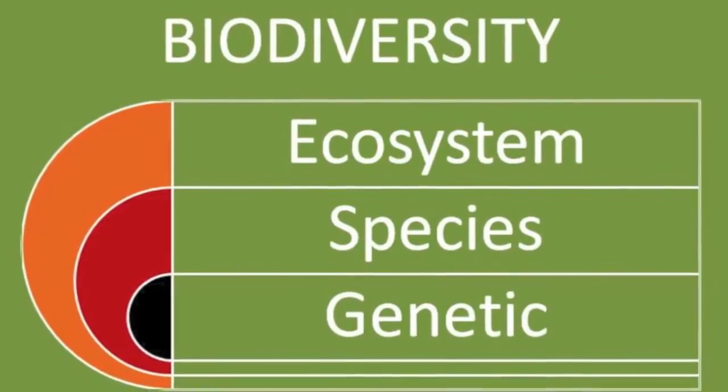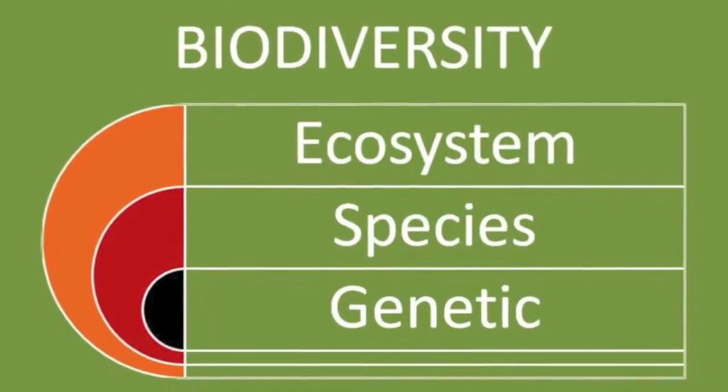There are three important aspects to biodiversity. Number one: ecosystem diversity — the variety of habitats available for different species to live in. Number two: genetic diversity — the variety of characteristics found within a particular species. Number three: species diversity — the variety of different species found within an ecosystem.